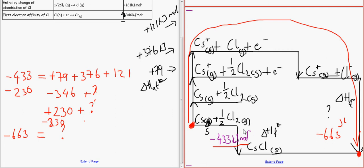Now if we double check it, if we add up all the numbers in the arrow it should equal to minus 433. So that is it for lattice enthalpy.